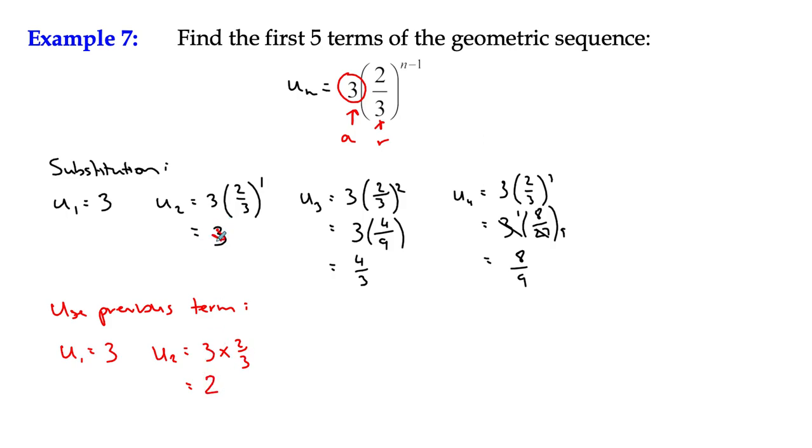Oh, I made a mistake up there. And you can see that. And u3 is the previous term, which is two, again multiplied by r, which is two thirds, which is four thirds, which is what we agreed up there.